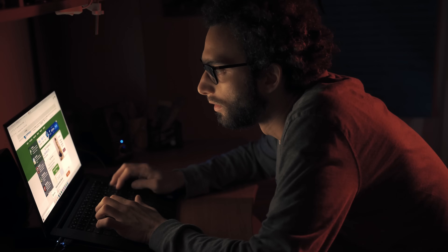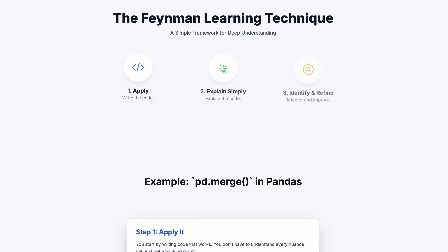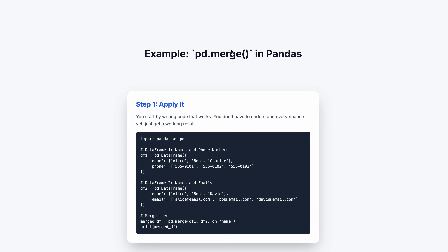As you work on a project, you'll constantly learn new things. How do you make sure you don't forget them? I have a powerful trick inspired by physicist Richard Feynman. Let's say you just learned how to use pd.merge to combine two datasets in pandas. First, apply it — look at the solution online and implement it in a project. Second, explain it simply — open a text file and pretend you're explaining it to a friend, using no technical jargon.